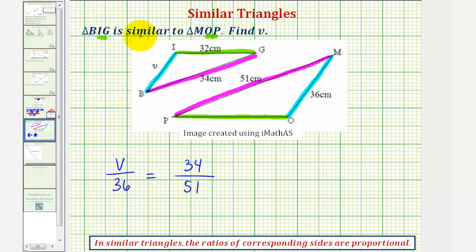And now we'll cross multiply and solve for V. V times 51 must equal 36 times 34. Well, V times 51 is 51V. And now we'll divide both sides by 51 to solve for V.